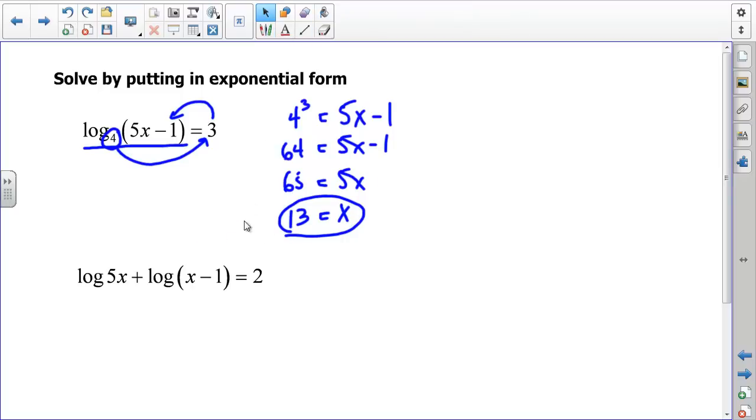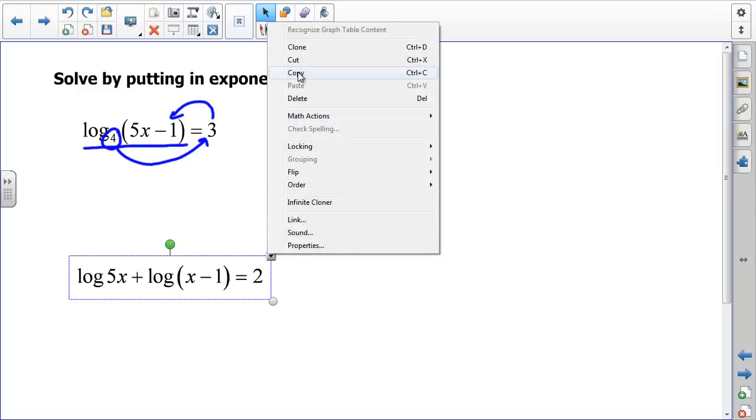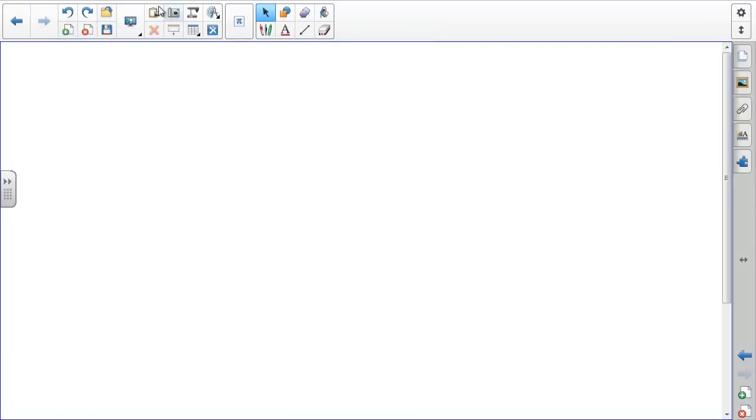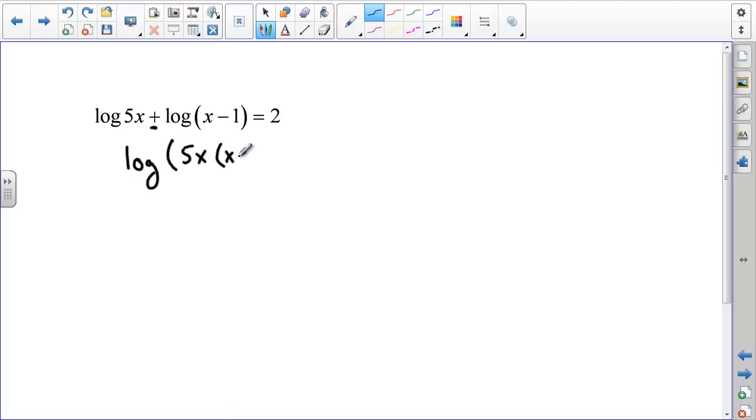This last one, I'm actually going to copy and paste onto the next page, because it's going to be a little bit trickier, a little bit more work. We get log of 5x plus log of x minus 1 equals 2. And so, what I'm going to do is, I see this addition. When you see addition, that means multiplication. So, we're going to say log of 5x times x minus 1, and that's equal to 2. When I multiply these, I actually get log of 5x squared minus 5x, and that's equal to 2. Now that I've simplified the log on the left side, I can write down the base as 10.